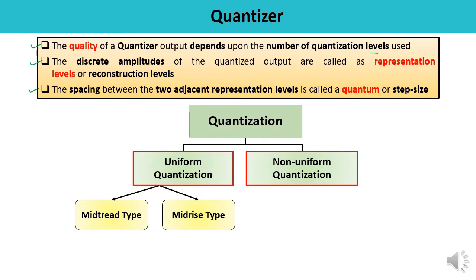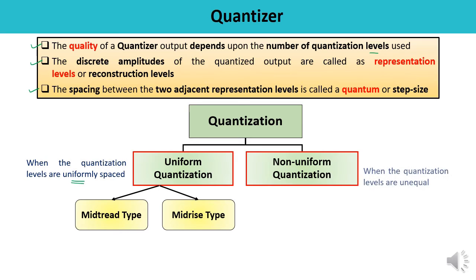The quantization process can be classified into two categories: uniform quantization and non-uniform quantization. Uniform quantization is where the step size remains the same throughout the entire input range — meaning the levels are uniformly spaced. Non-uniform quantization is where the step size varies according to the input signal values, meaning the quantization levels are unequal and vary according to the input values.